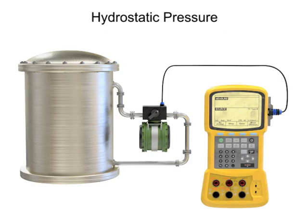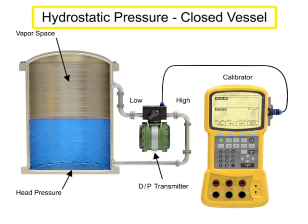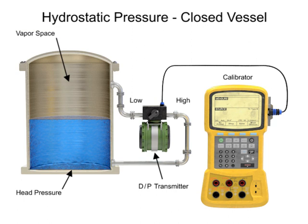Hydrostatic pressure can only be calculated from an open container. Within a closed or pressurized vessel, the vapor space above the column of material adds pressure and results in inaccurate calculated values. The vessel pressure can be compensated for by using a differential pressure transmitter.